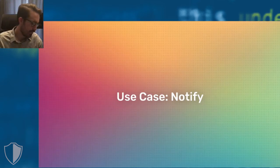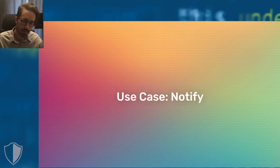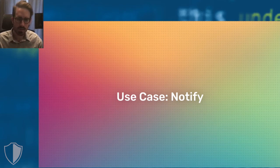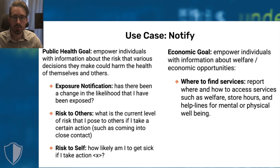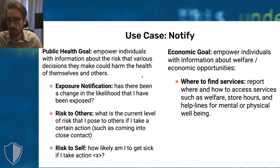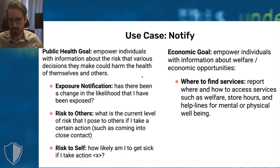Let's talk about the second use case. The first use case — surveying — is all about notifying public policy and public health experts for a given region with information necessary for them to make good decisions. This next use case — notify — is all about notifying individuals so they can be well informed and make good decisions. On the public health side, we want to empower individuals with information about the risk that various decisions they make could harm the health of themselves and others.